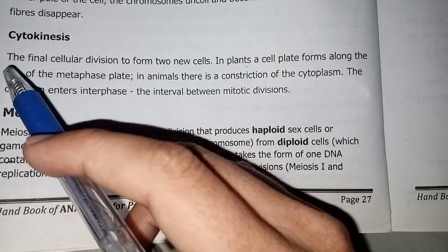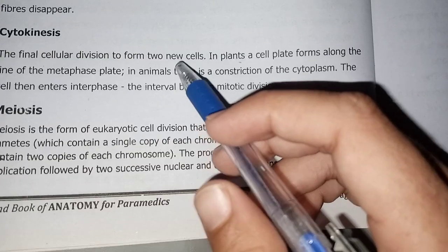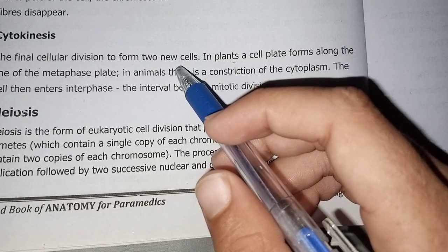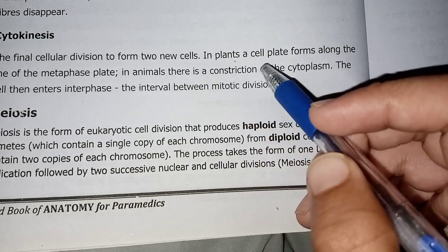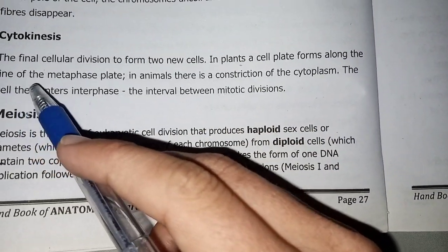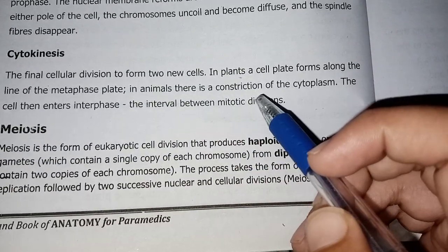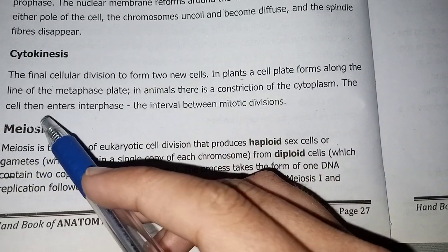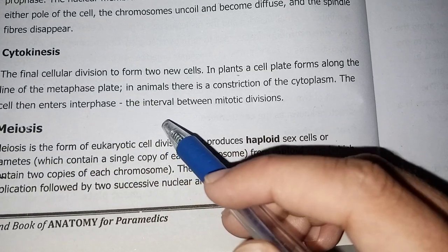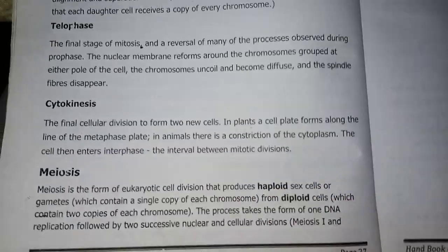Following telophase is cytokinesis — the final cellular division to form two new cells. In plant cells, a cell plate forms along the line of the metaphase plate. In animal cells, there is a constriction of the cytoplasm. The cell then enters interphase, the interval between mitotic divisions.